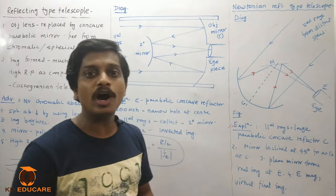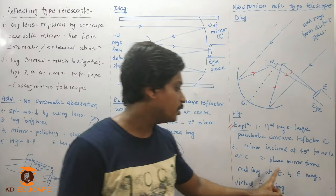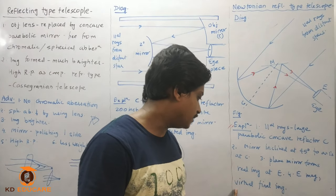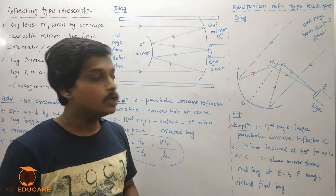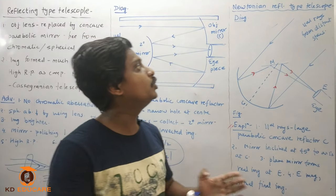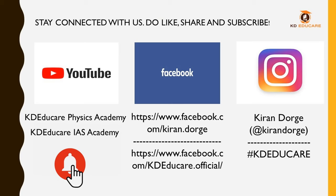From E we have to magnify. The eyepiece magnifies and a virtual final image is obtained at E, which we can see. This was the overall discussion about Newton's reflection type telescope. Thank you.